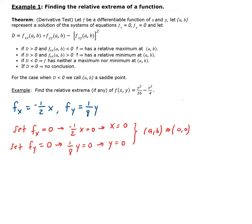We need to find the second partial f squared with respect to x squared, the second partial f squared with respect to y squared, and then the mixed partials with respect to x and y. The second partial with respect to x squared is negative one-half. The second partial with respect to y squared is one-eighth. And the mixed partial — since the partial of f with respect to x is negative one-half x, taking the derivative of that with respect to y gives us 0.